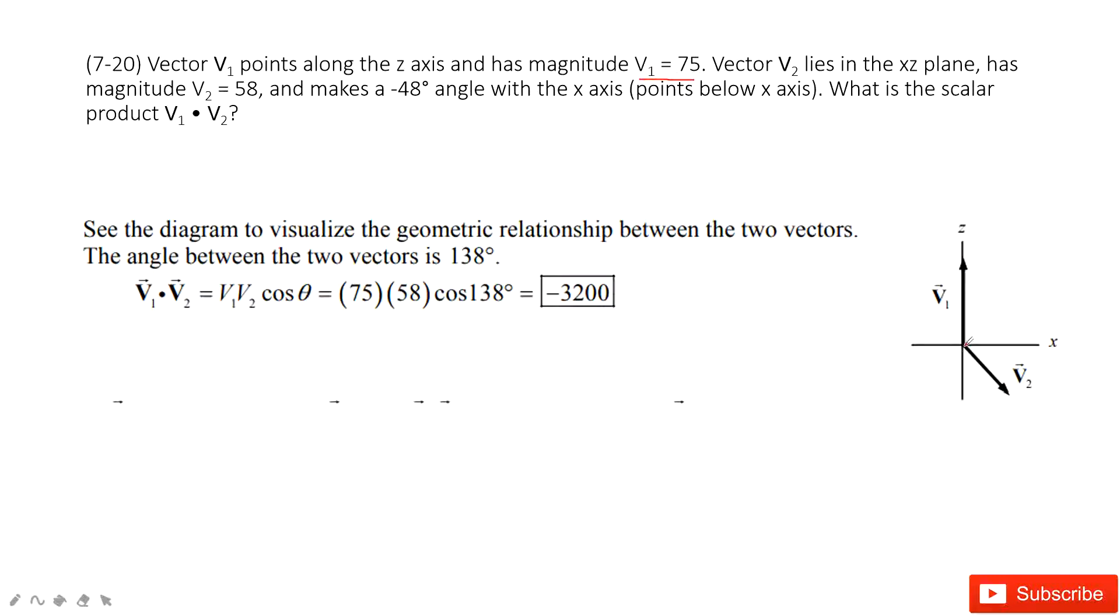We also have a second vector v2 with magnitude 55. It makes a negative 48-degree angle with the x-axis component. So that means this one is 48 degrees. Do you agree?